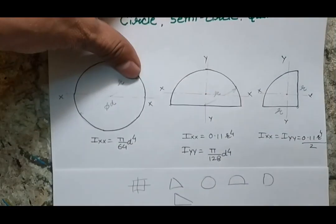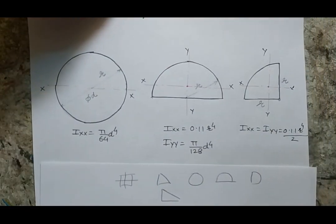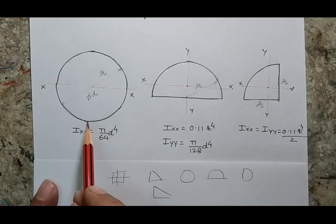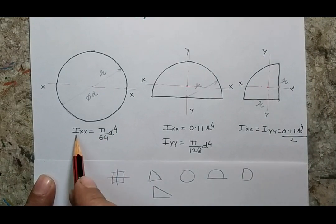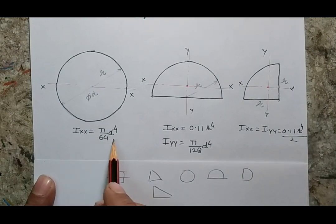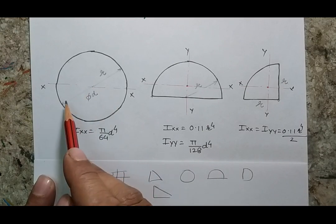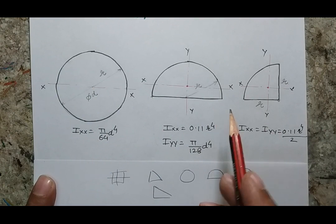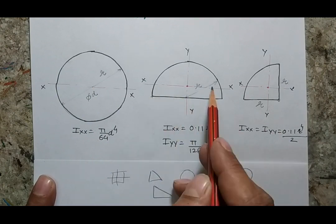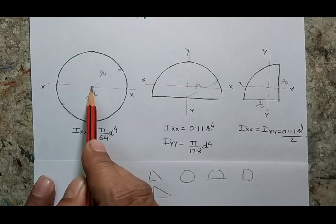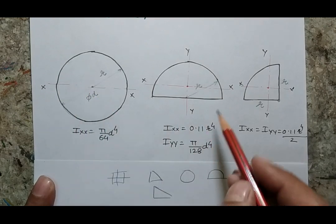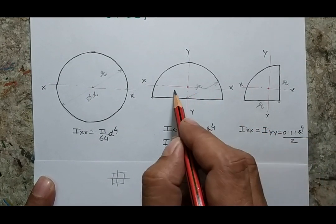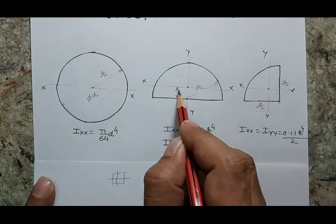Let's start with three different values. In the case of a circle, the moment of area about any diametral axis is defined by (π/64)d⁴, where d is the diameter. When we move from circle to a semicircular body and consider the moment of area about its centroidal axis — the centroidal axis is the diameter for a circle, but for a semicircle it shifts to a distance of 4r/3π from the base.